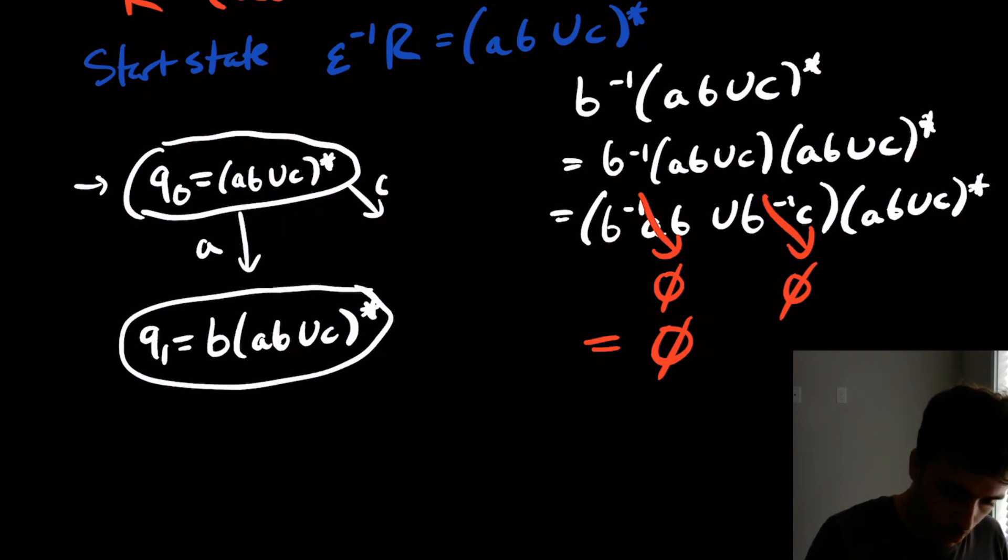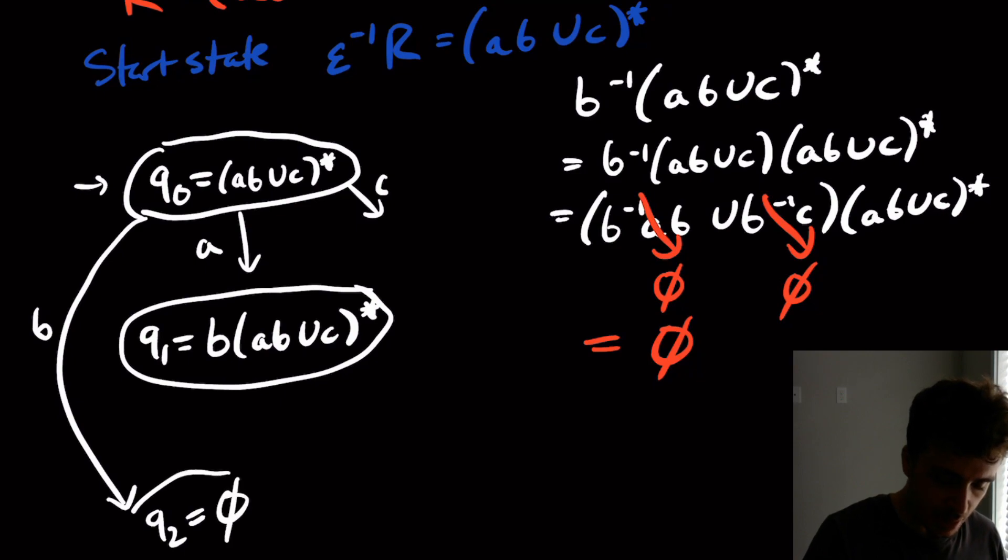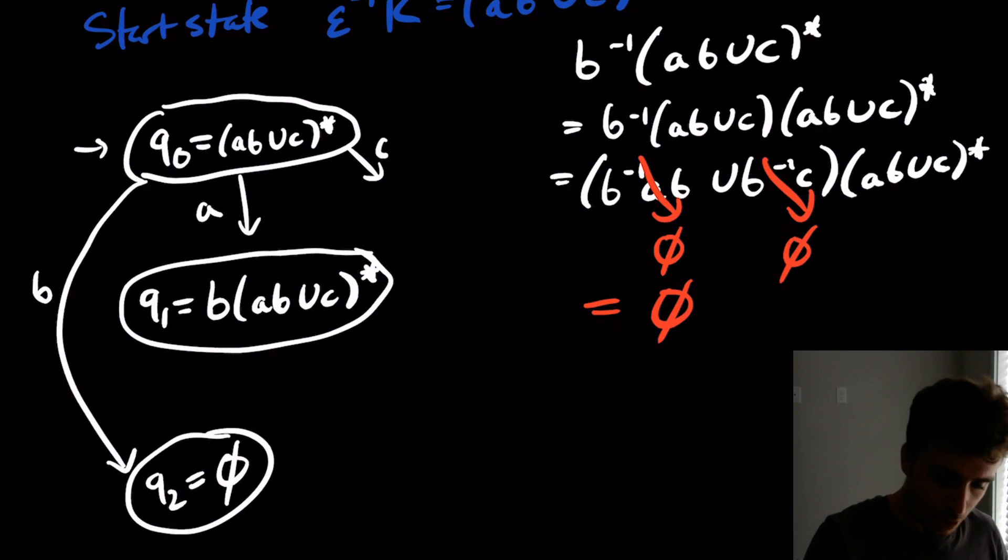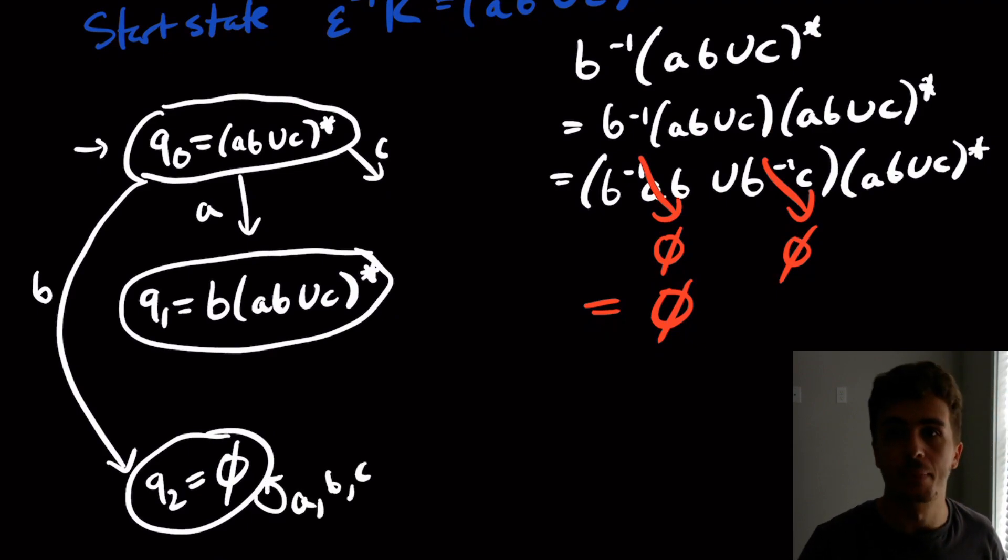I'm going to make a state over here on input B, which I'm going to call q2, which is the empty set. And to save a little bit of work, if you apply a derivative with no strings, you're still going to get no strings. So this one, as we might expect, is going to loop on A, B, and C.